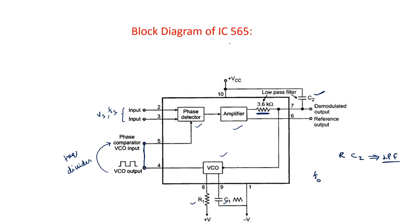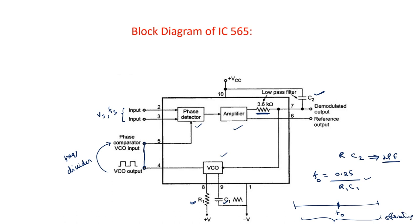For the IC 565, the free running frequency is given by 0.25 divided by R1C1. R1 and C1 must be properly chosen so that the free running frequency equals 0.25 by R1C1. As discussed in earlier lectures, you should choose this free running frequency to be in the middle of the operating range of the PLL. These are the main details of IC 565.